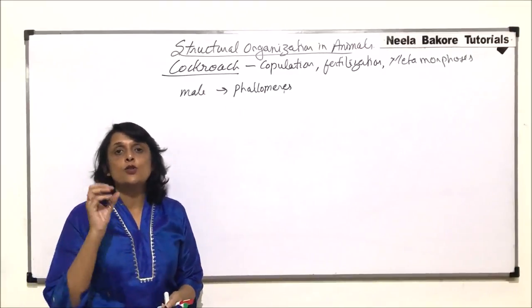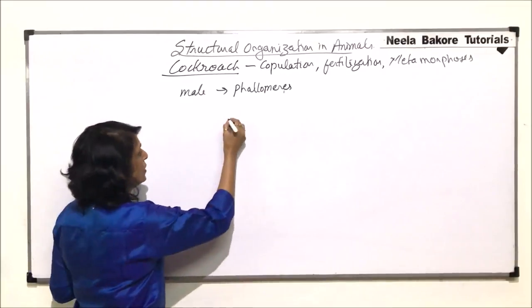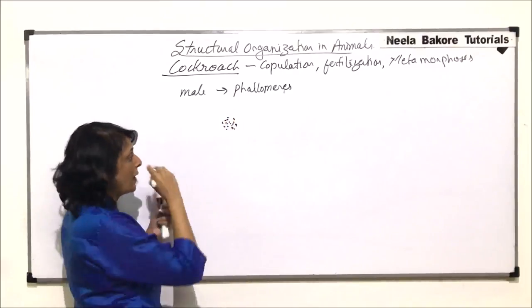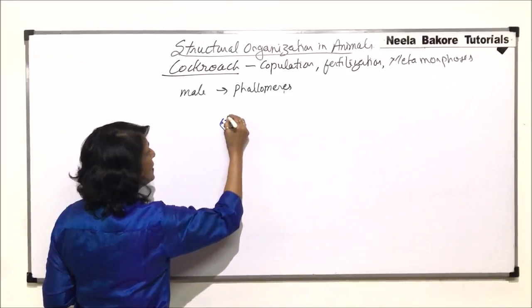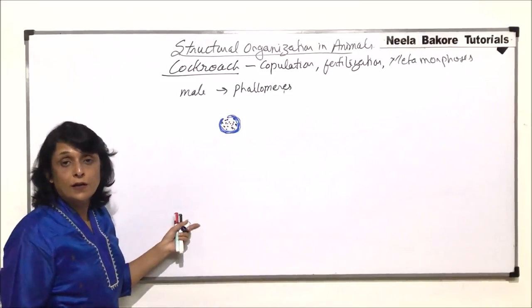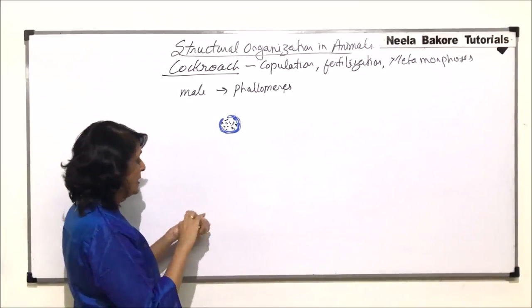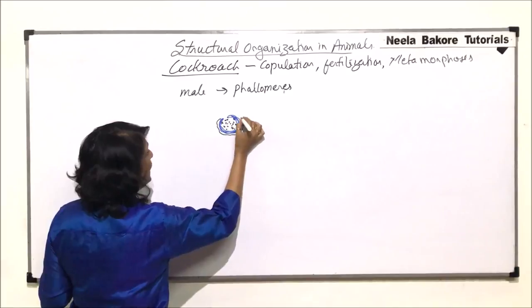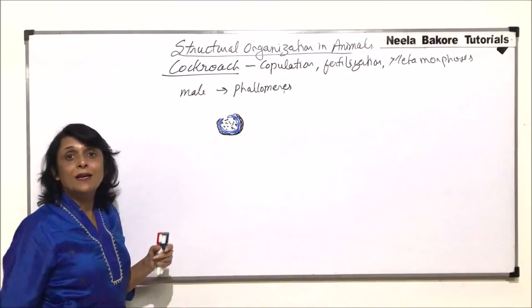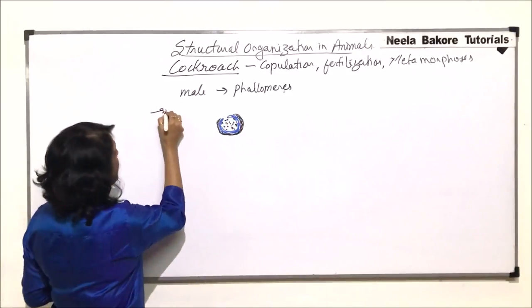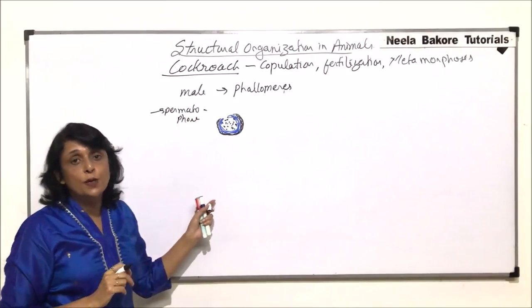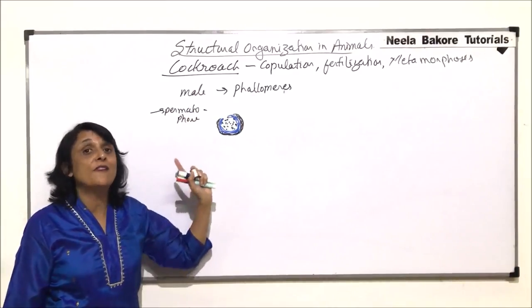Males have already stored sperms into structures known as spermatophores. When we discussed the male reproductive system, we saw that one layer is deposited around the sperms, secreted by the longer peripheral tubules. The second layer is deposited by the smaller or shorter tubules of the mushroom-shaped gland. There is also a third layer which is secreted by the phallic gland.